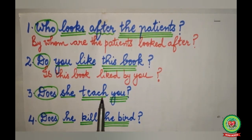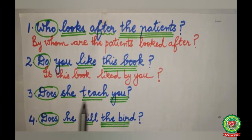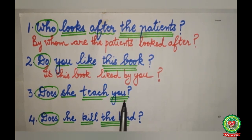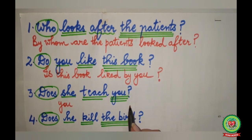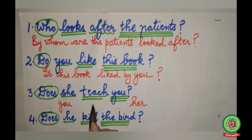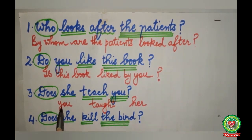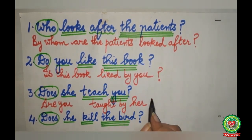The third example: 'Does she teach you?' is the active voice. The subject gets a single underline. The action word 'teach' gets a double underline. The subject will go to the last and become 'her'. 'Teach' will change into 'taught'. With 'you' we will use 'are' as the helping verb. So the answer is: 'Are you taught by her?'